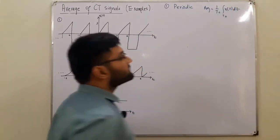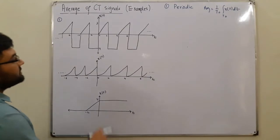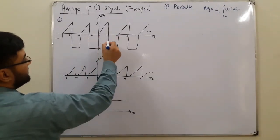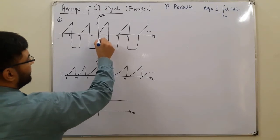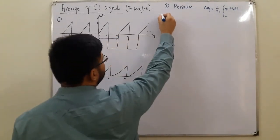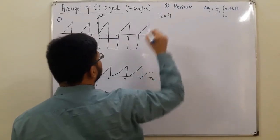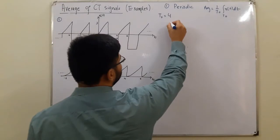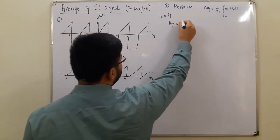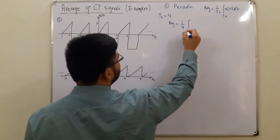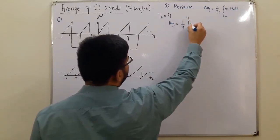Have a look at the period. The period is 4, so I would write over here that T naught is equal to 4. So you integrate the function over here, so the average value would be 1 over 4, the integration 0 to 4, x of t dt.